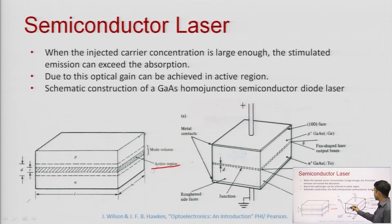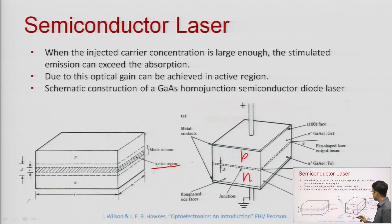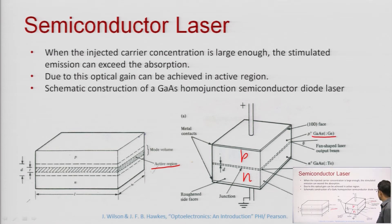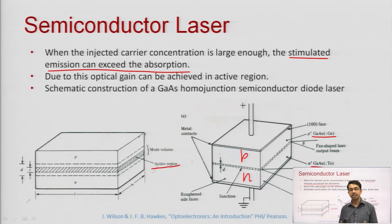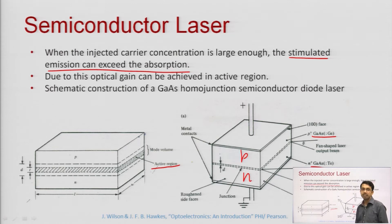Electrons and holes are injected across the junction in sufficient numbers because these are heavily doped n-type and p-type materials. The concentration of electrons and holes in heavily doped materials is high. This condition is sufficient to create population inversion in the narrow active region. This is gallium arsenide — the material used is gallium arsenide. When the injected carrier concentration is large enough, stimulated emission can exceed absorption, and we get lasing action.